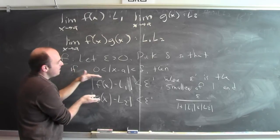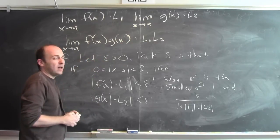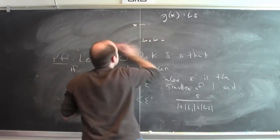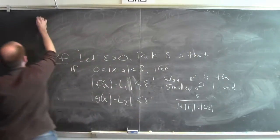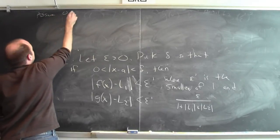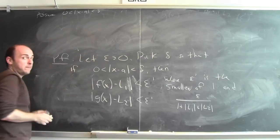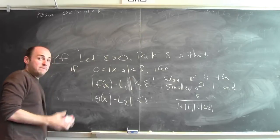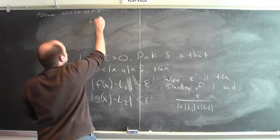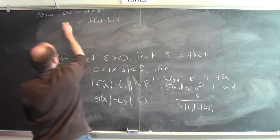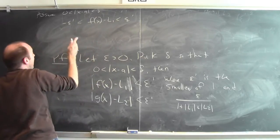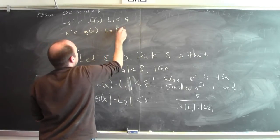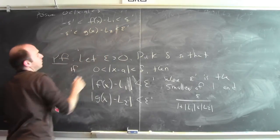Now I've got to go from those statements to the conclusion that f(x)·g(x) is close to l1·l2. Assuming x is within delta of a, I know |f(x) − l1| < epsilon prime, so f(x) − l1 is between −epsilon prime and epsilon prime. Similarly, g(x) − l2 is between −epsilon prime and epsilon prime.